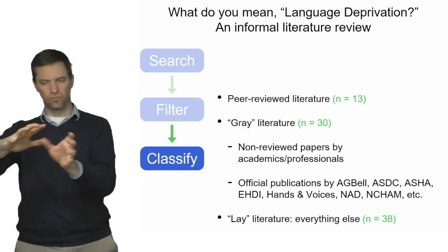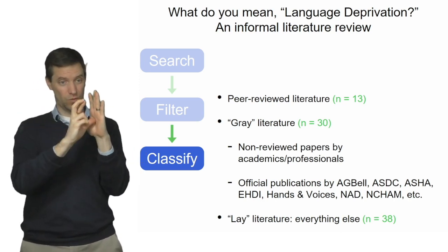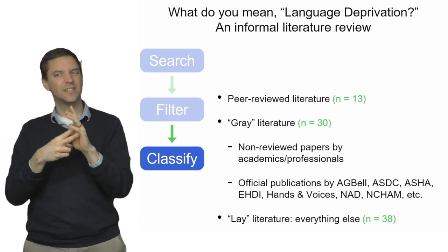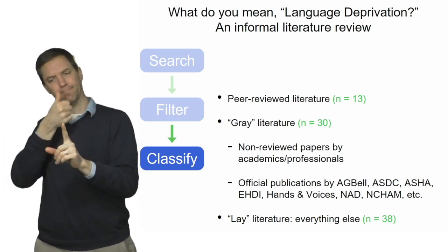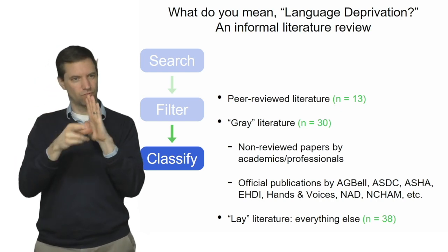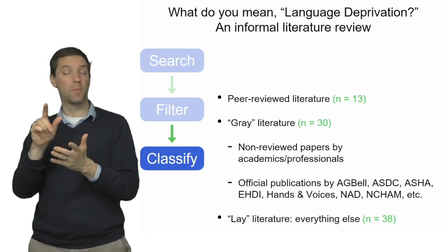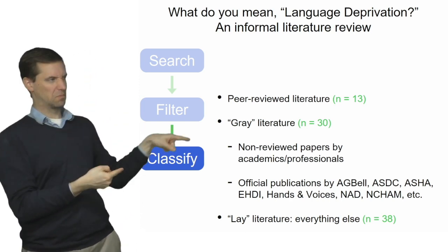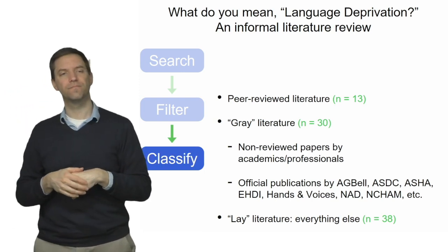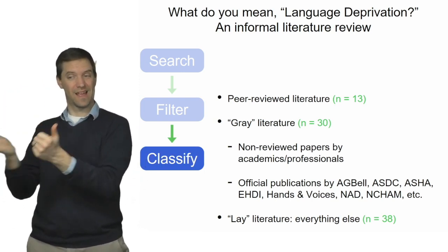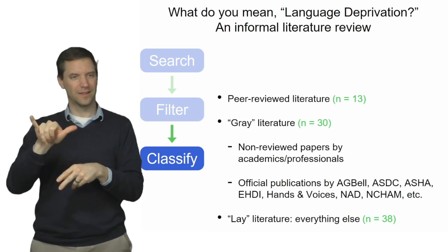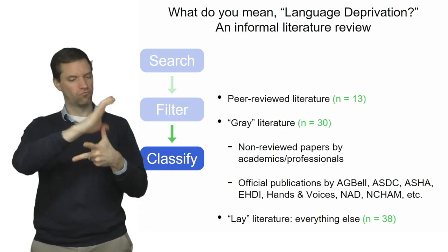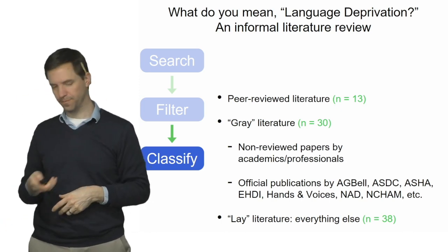We then took those 81 observations and classified them as belonging to three types of literature: peer-reviewed literature; gray literature, meaning written by an expert but without going through peer review or published by a professional organization in these areas; and a third category of everything else, which we called lay literature — something that anybody could write. Those were the three classifications.